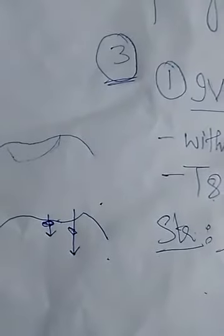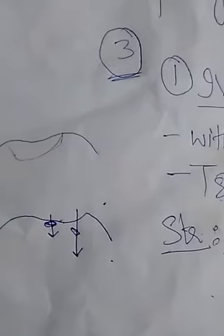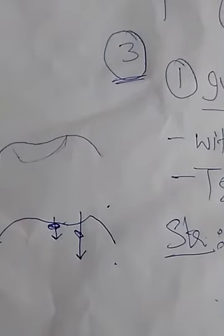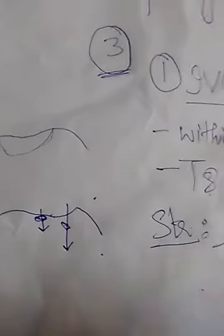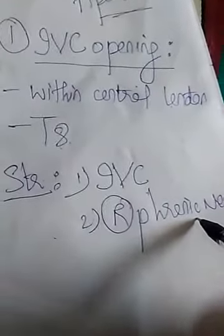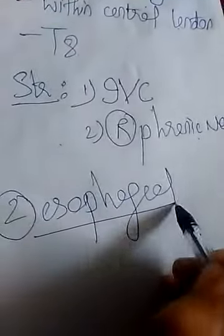Apart from that, some structures like the subcostal vessels and the left phrenic nerve also pierce the diaphragm. To summarize: the IVC opening is within the central tendon at the level of T8, and structures passing through it — IVC and right phrenic nerve — are both piercing the diaphragm.